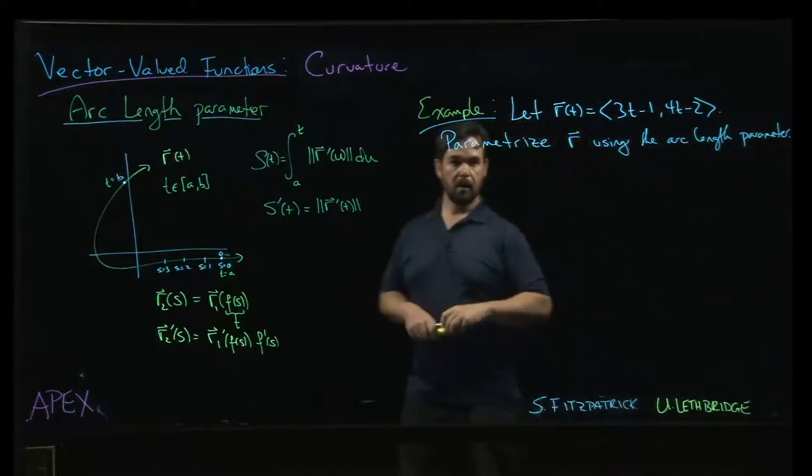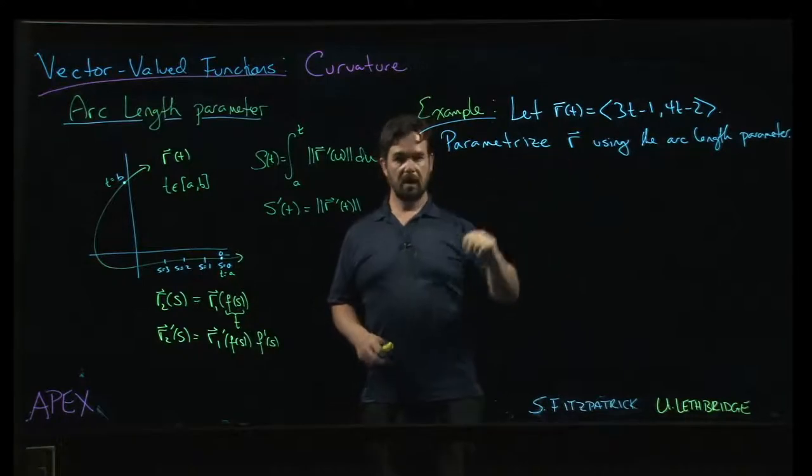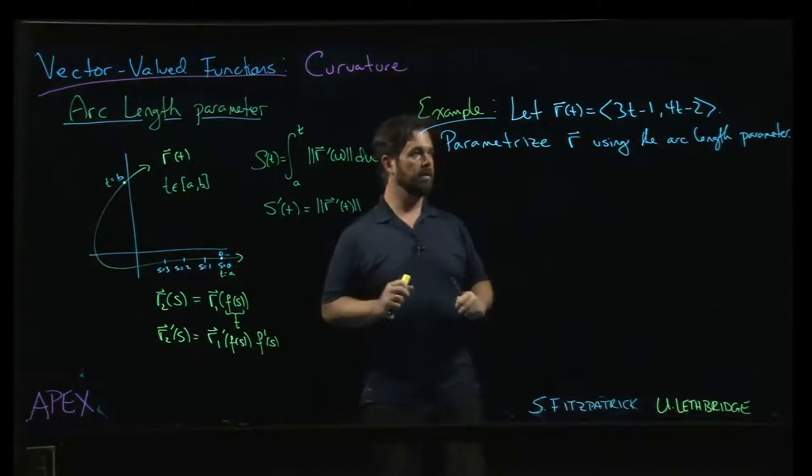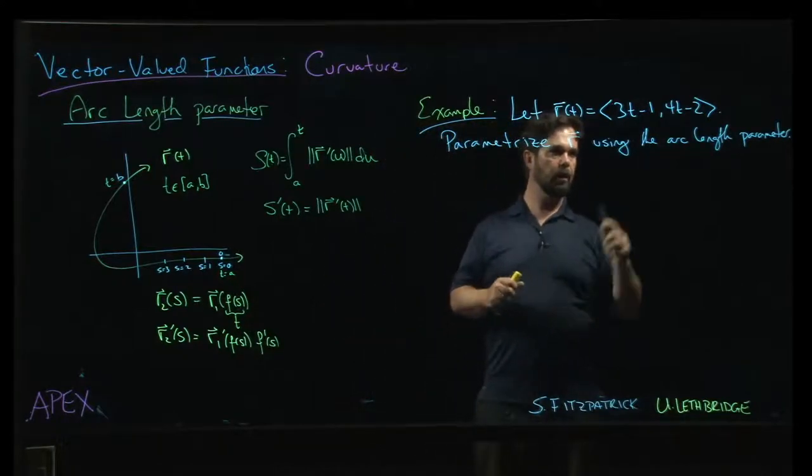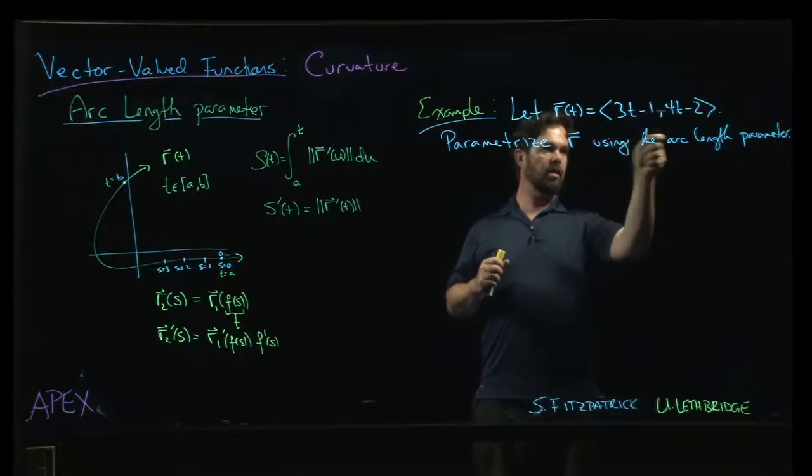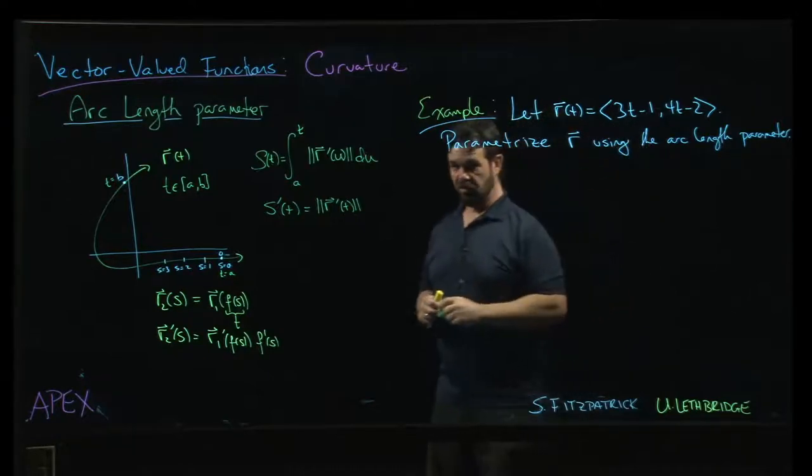Alright, so here's the example as promised. We're given a vector-valued function here. Now, in this case, notice that both components are linear functions of t.